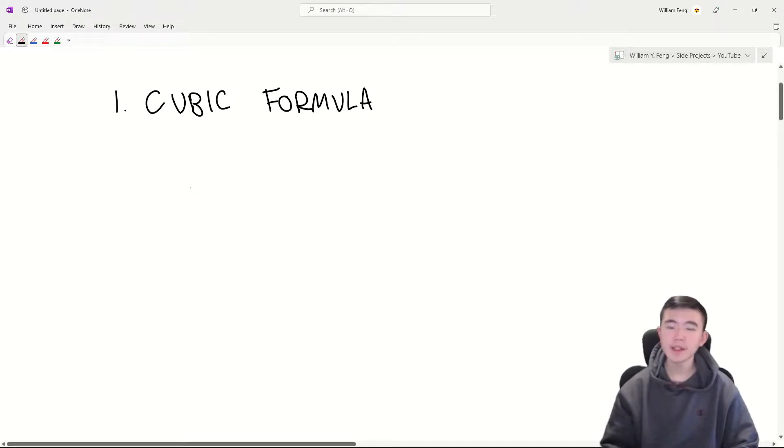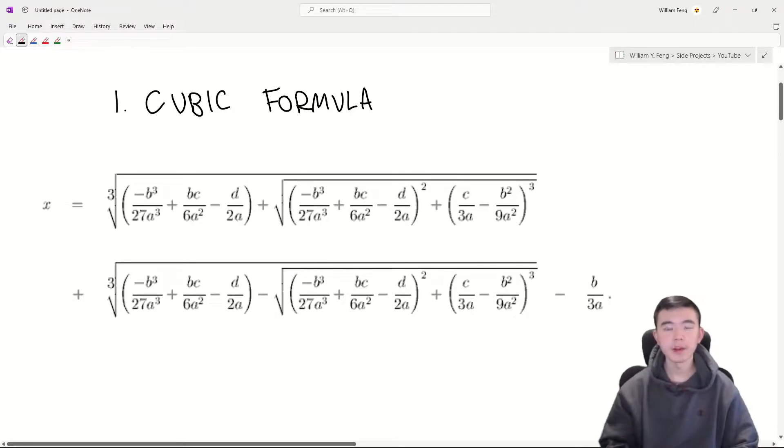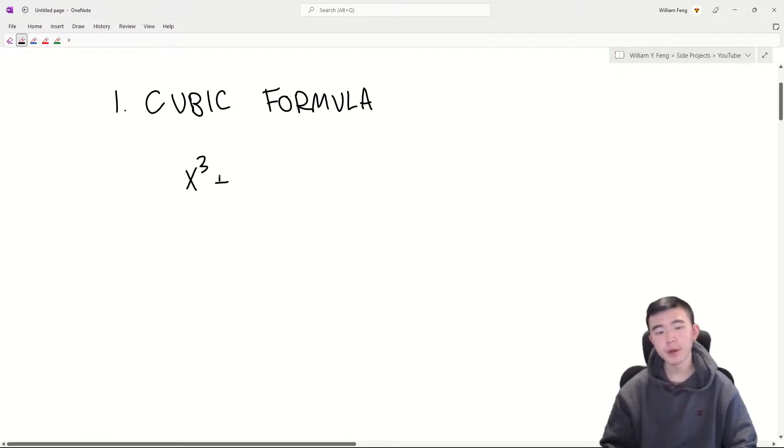First up is the cubic formula. Now, this isn't the super ugly one that works for general cubics. This only works for cubics of the form x cubed plus px plus q equals 0. Notice it has no quadratic term.